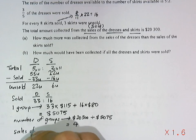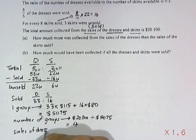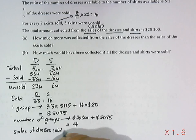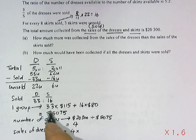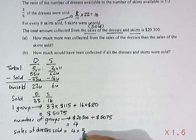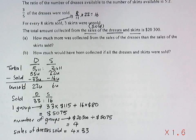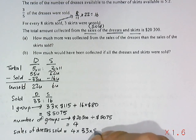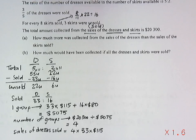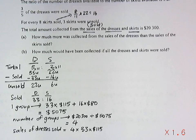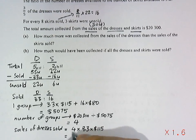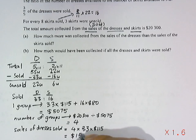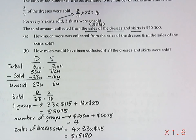So for four groups, the total sales of all the dresses sold is four times thirty-three times one hundred and fifteen dollars, which gives us a total of fifteen thousand one hundred and eighty dollars.